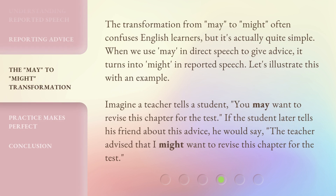The transformation from may to might often confuses English learners, but it's actually quite simple. When we use may in direct speech to give advice, it turns into might in reported speech. Let's illustrate this with an example. Imagine a teacher tells a student, 'You may want to revise this chapter for the test.' If the student later tells his friend about this advice, he would say, 'The teacher advised that I might want to revise this chapter for the test.'